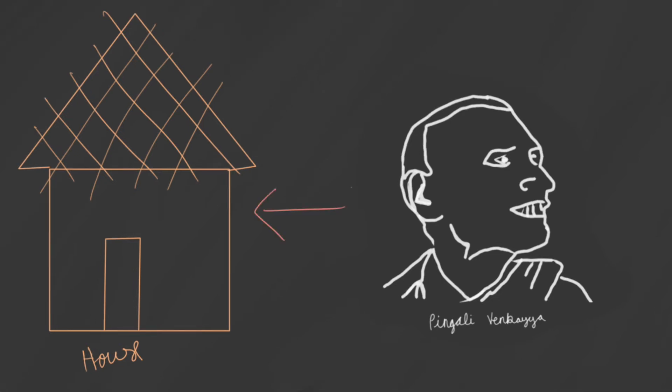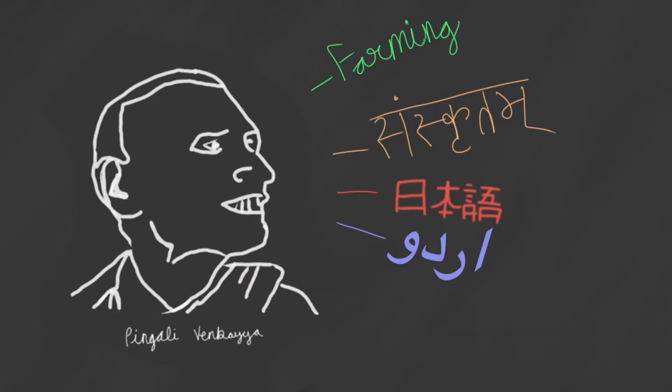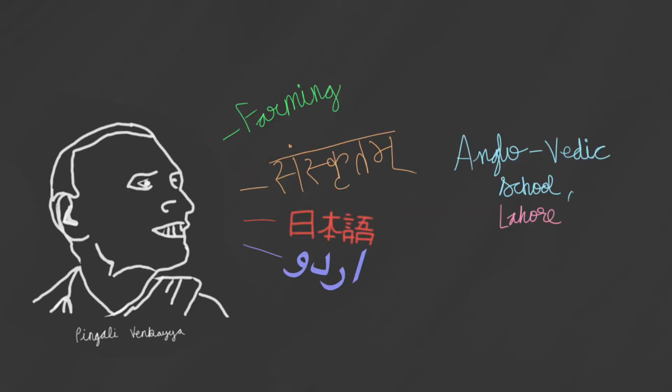After he started searching for a job, his parents called him back since his sisters were getting married and moving away. During this period he also spent time researching farming and studied Sanskrit, Urdu, and Japanese in the Anglo-Vedic School in Lahore.